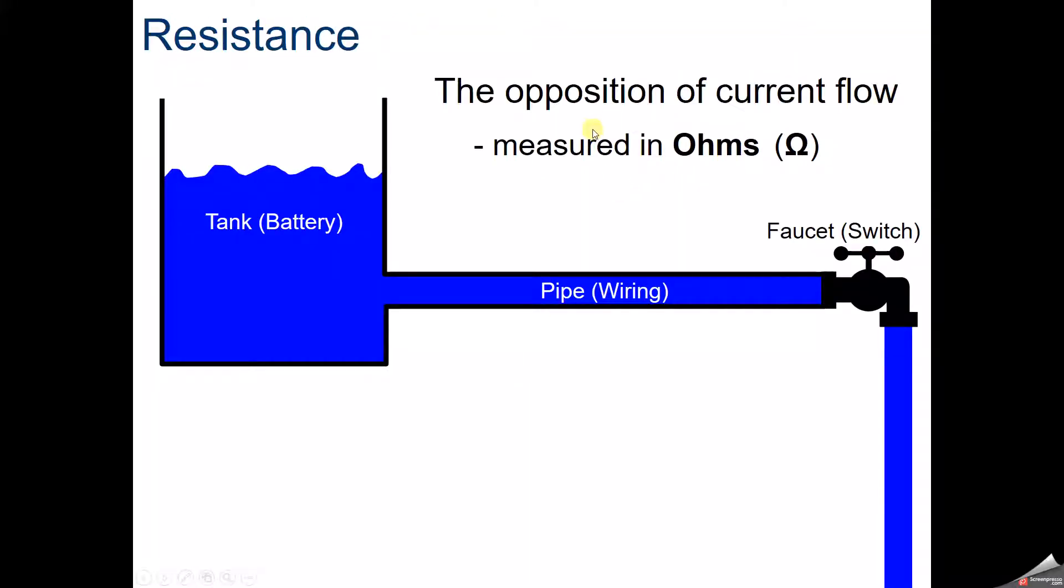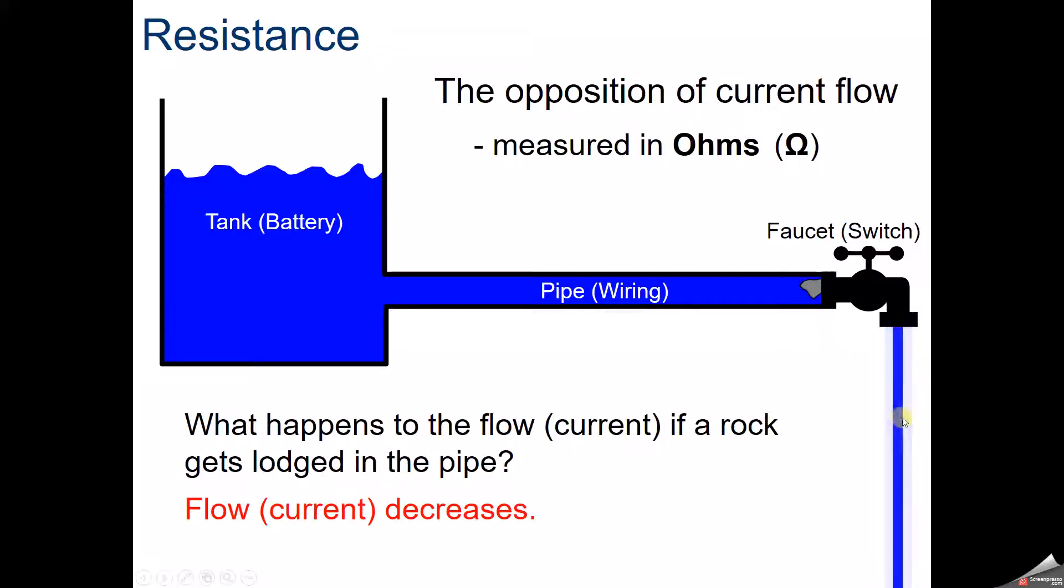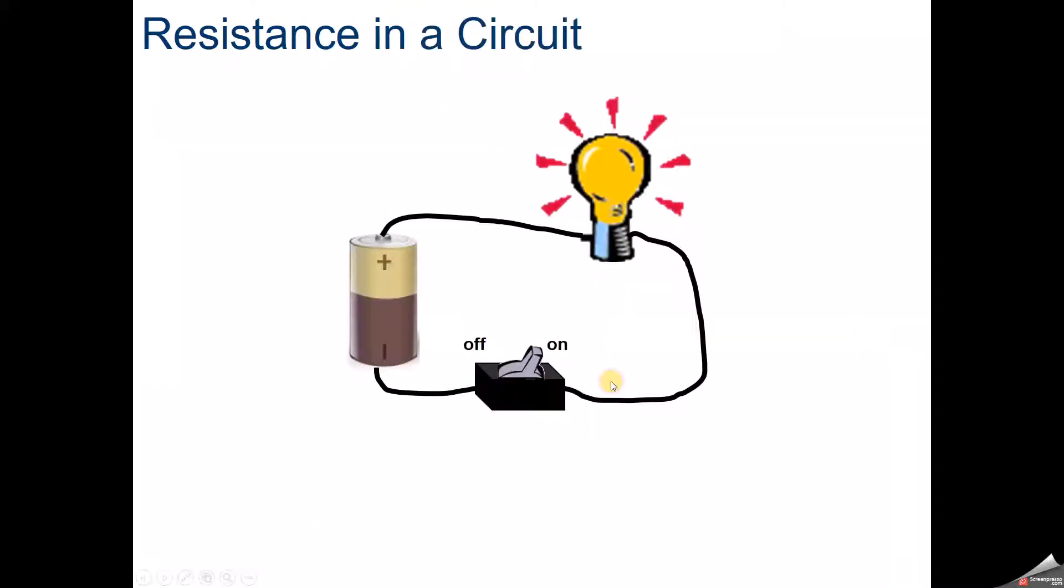Resistance is the opposition to current flow, measured in ohms. Right now there's voltage and current running through. But what happens if we drop a rock into the pipe that gets lodged? We're adding resistance into that pipe, so the flow decreases. If we add resistance in this series circuit, the current will decrease.